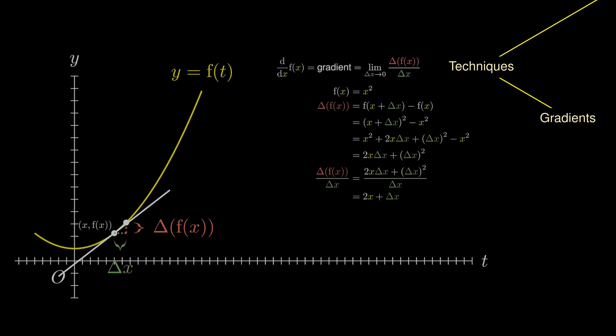Finally, to get the actual gradient, we consider the limit as delta x approaches zero. On the left side, we obtain the derivative of x². On the right side, the delta x approaches zero and we are left with 2x. To abbreviate, we also use the notation f'(x) to mean the same thing as the derivative of the function f.